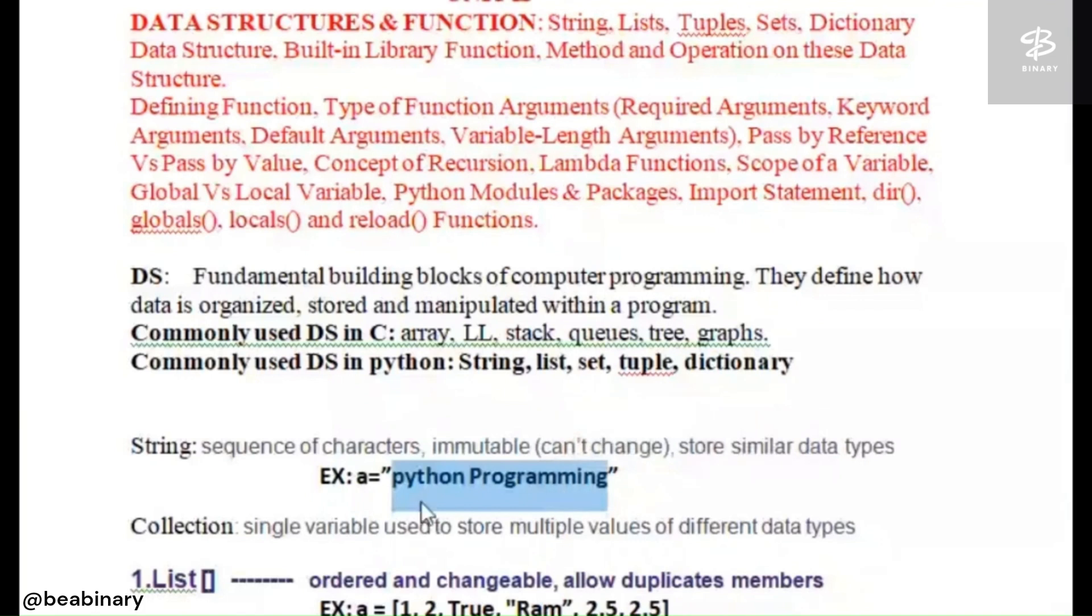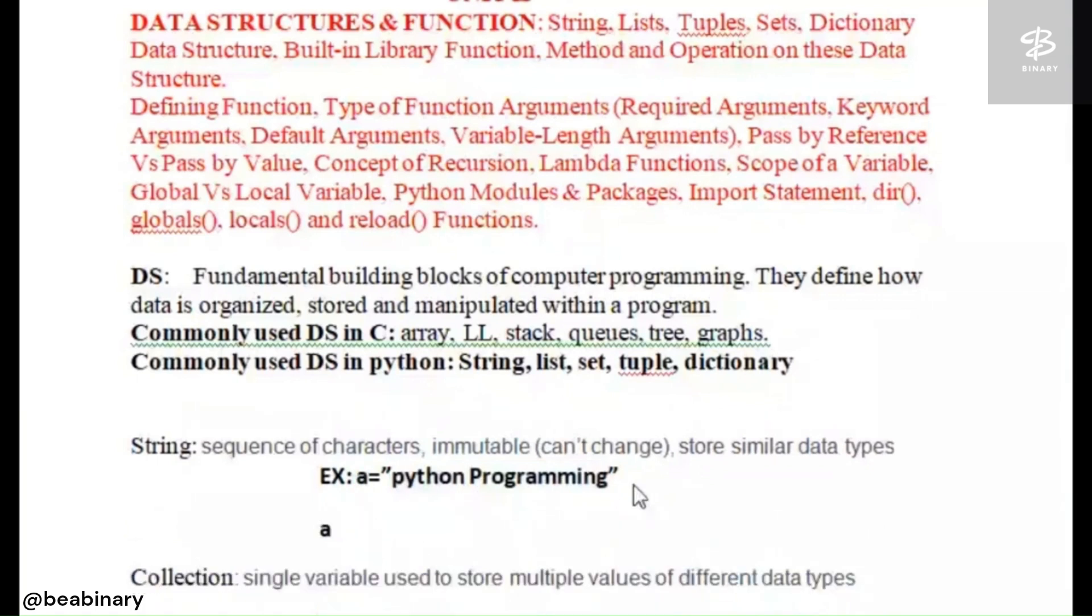This sequence of characters will automatically be stored in variable A. For example, if I store A equals 65, the value will be stored in A, but here it is a string data type, so I am using characters.